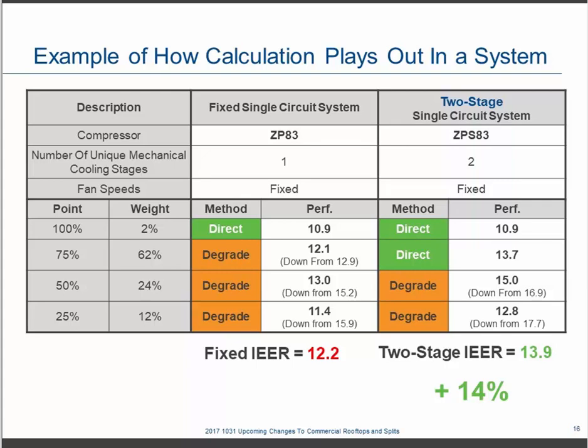You could also put in two smaller fixed-capacity compressors. There's a lot of flexibility with multiple compressors in how you hit different weighting points. If you mix and match compressor sizes, you could hit the 50 percent point directly and eliminate that degradation. But trade-offs include size constraints — can you actually fit two compressors in a system? — plus extra tubing cost and piping complexity. Every application is going to be different.